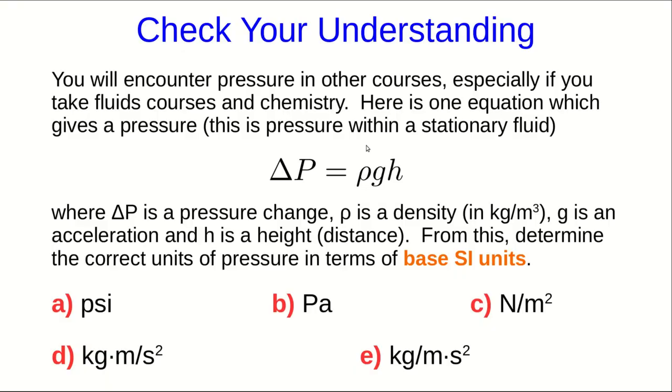Let's check your understanding. As usual, if you're in the course and you're doing this through Moodle, then Moodle will go on and ask you this question. Otherwise, you should still try and decide on the answer before you go on to the next part of the video lecture. So, here's an equation for pressure of a stationary fluid, and I tell you what all the quantities are. There's a density, there's an acceleration g, and h is a height, and from this you can use the processes I just showed you to determine the correct units of pressure in terms of base SI units.